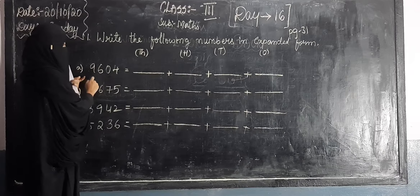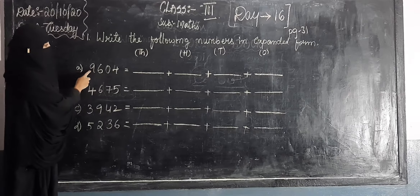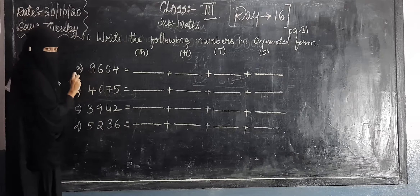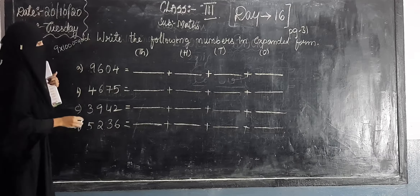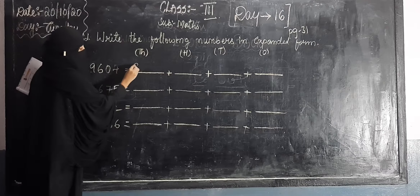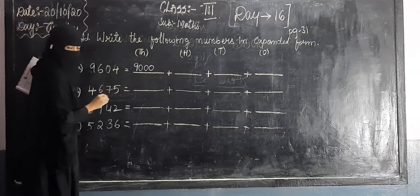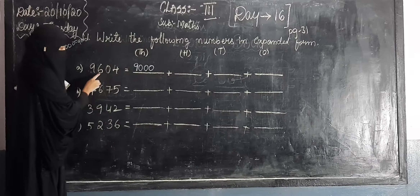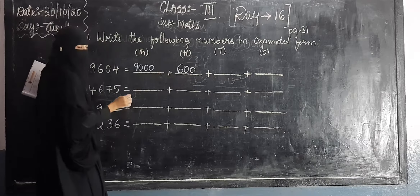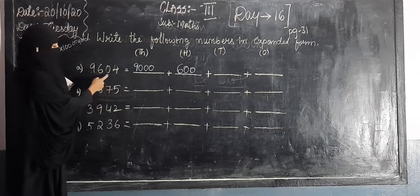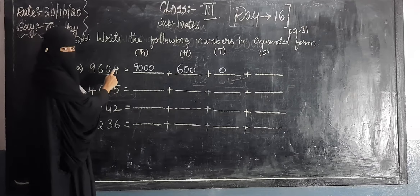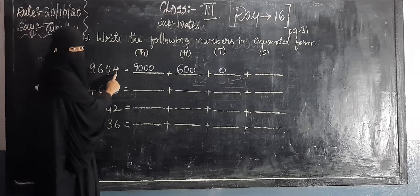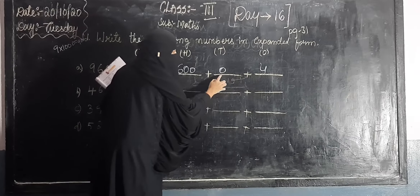Tell me the place value of 9 here. 9 is in the thousands place. So, 9 into thousand, that is nine thousand. For the hundreds place, the digit is six — we will write six hundred. For the tens place, there is zero, so we will write zero only. For the ones place, the digit is four. So: nine thousand, six hundred, four. Because we don't have tens.